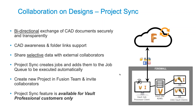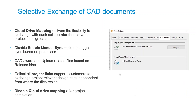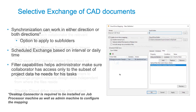This is done through first allowing it — you map the cloud drives — and this is an administrative effort. But once you do this, you have the ability to filter down and map data from your vault out into Fusion Team. Inside of Fusion Team, that can be your contractors, suppliers, anybody downstream.